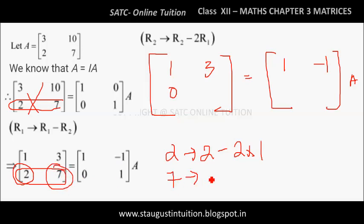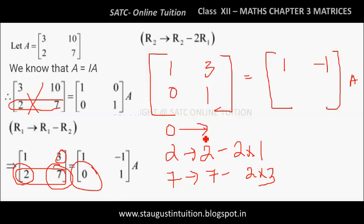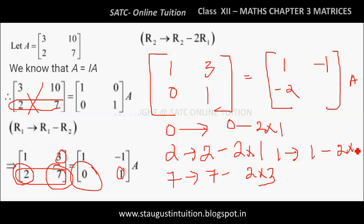Similarly, 7 changes to 7 minus 2 times 3, so 7 minus 6 equals 1. Clear. Similarly on the identity side: 0 changes to 0 minus 2 times 1, that is minus 2. Next, 1 changes to 1 minus 2 times minus 1. That gives 1 minus (minus 2) equals plus 2. So 1 plus 2 equals 3.